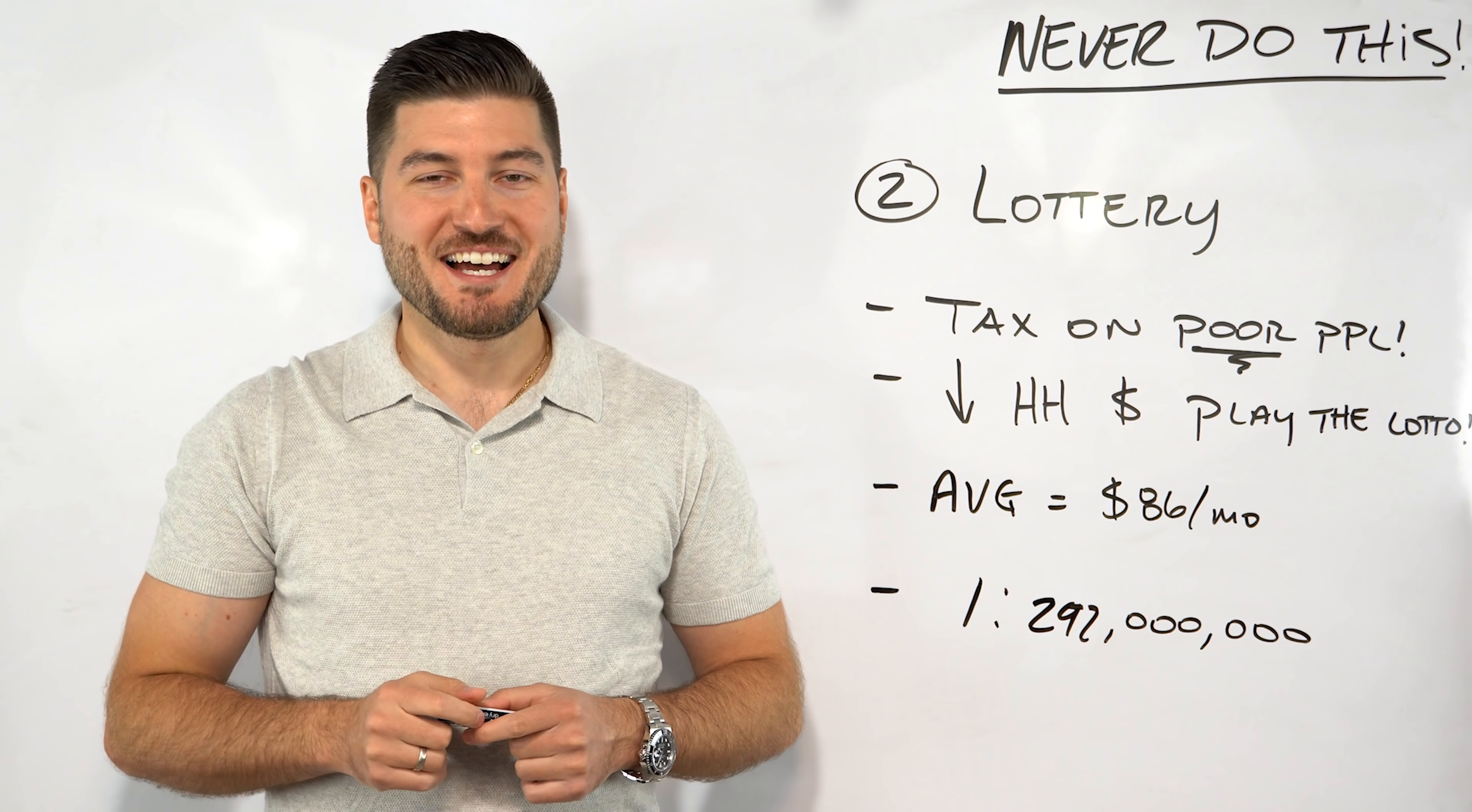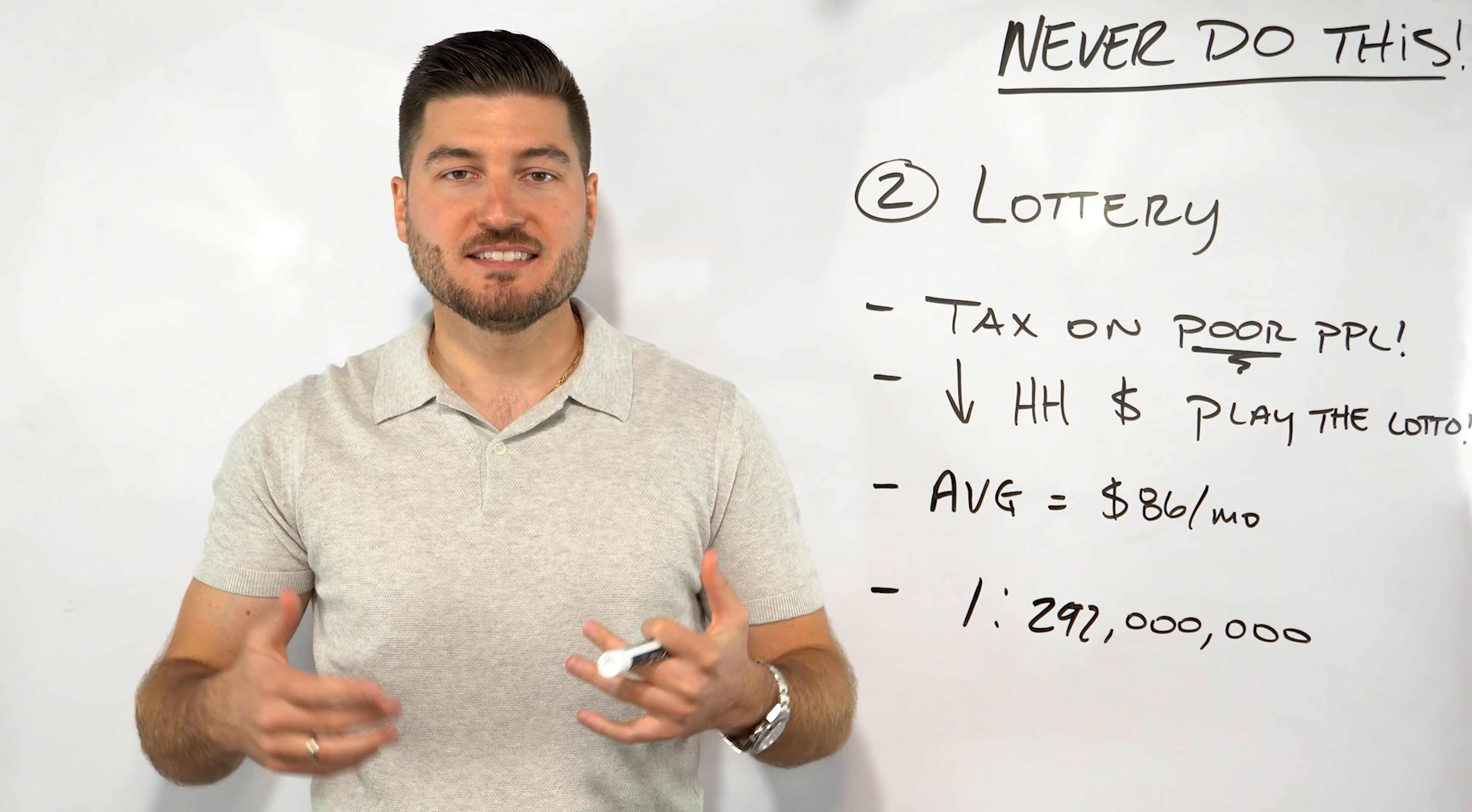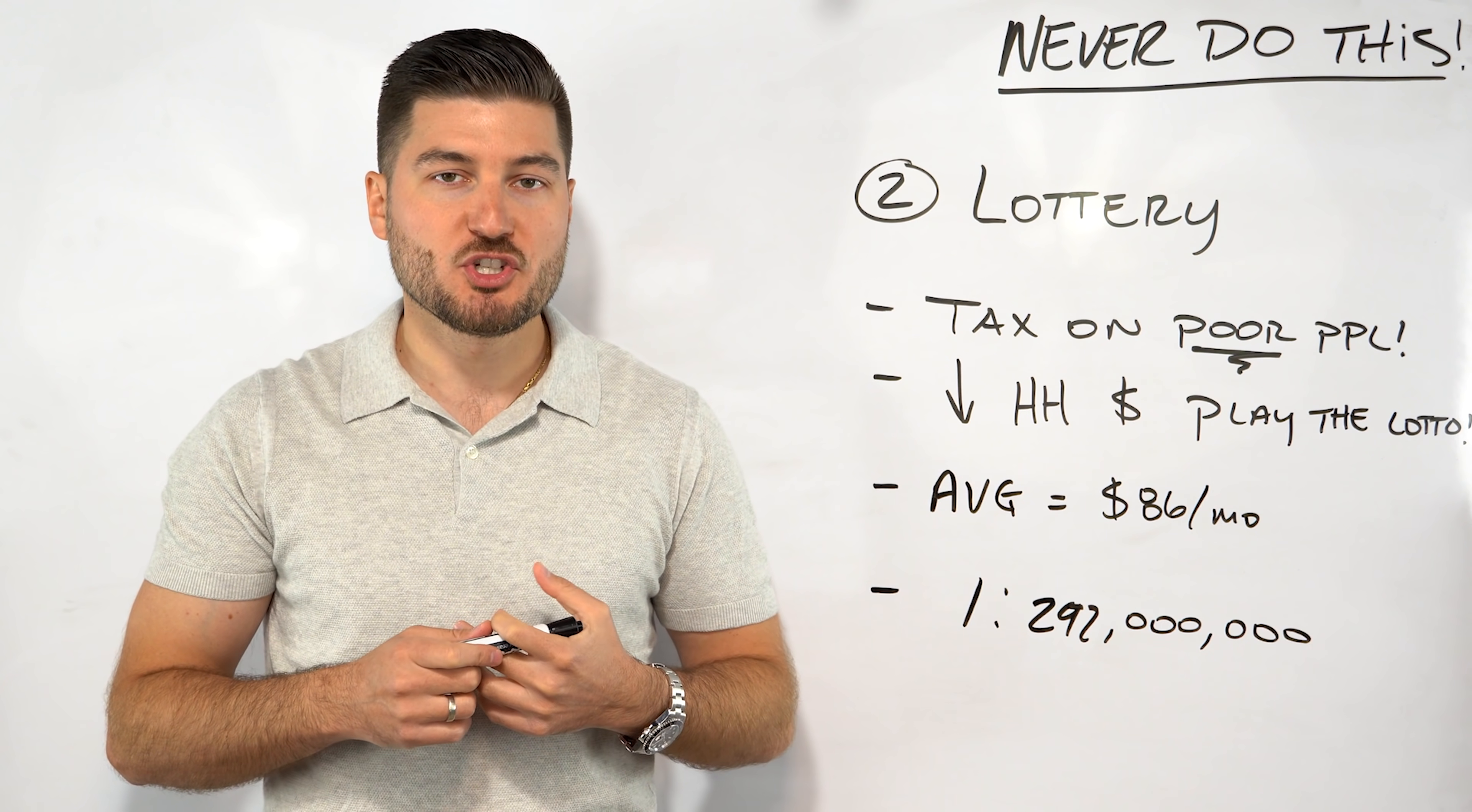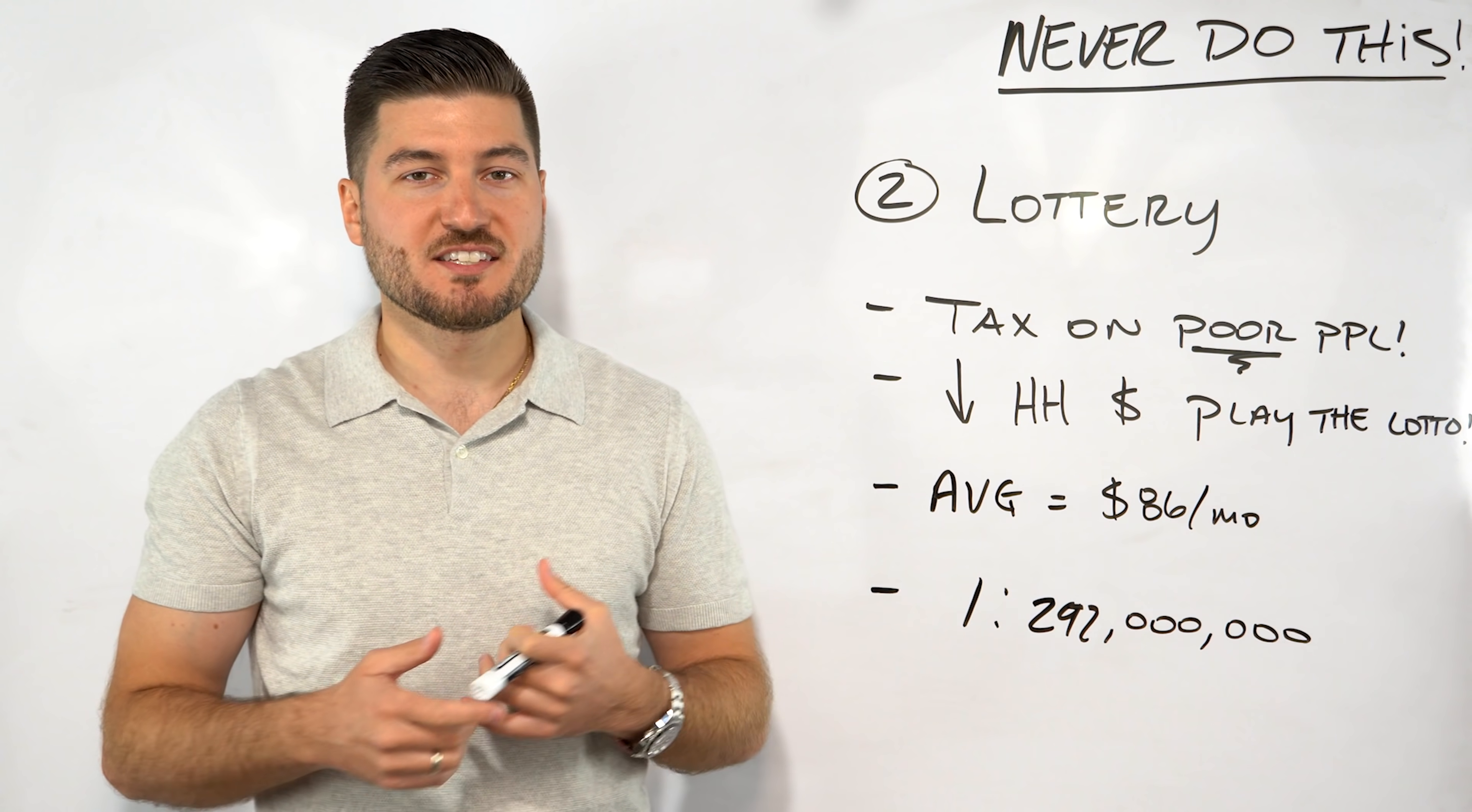Number two is don't play the lotto. I know a lot of people that give lottery tickets as gifts during the holidays. My mom even does this, but she's not a regular lottery player. My point is that lottery is literally a tax on poor people. Demographics show that lower household incomes play lottery at a higher rate. Much of this money goes towards government initiatives, making this a voluntary tax on poor people.